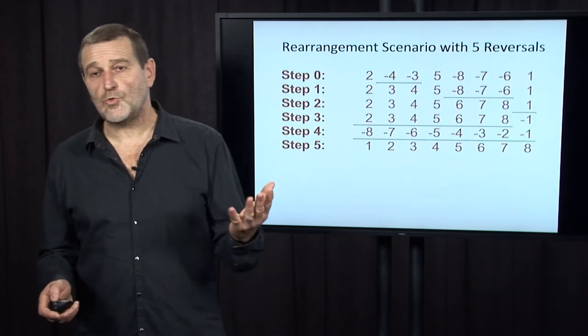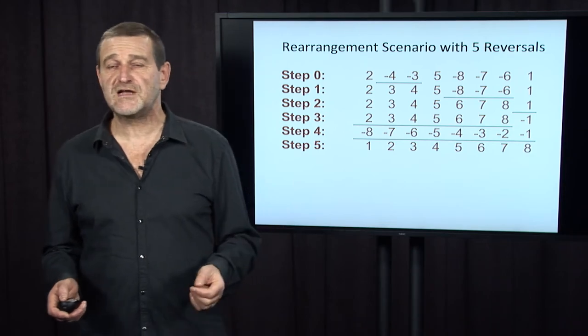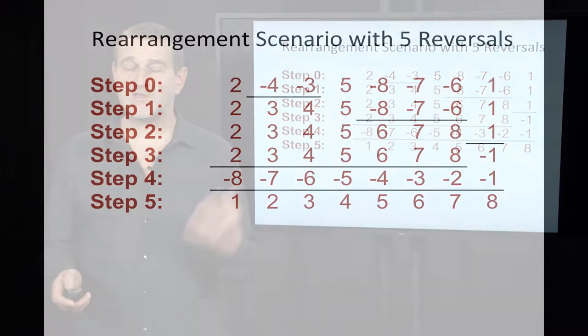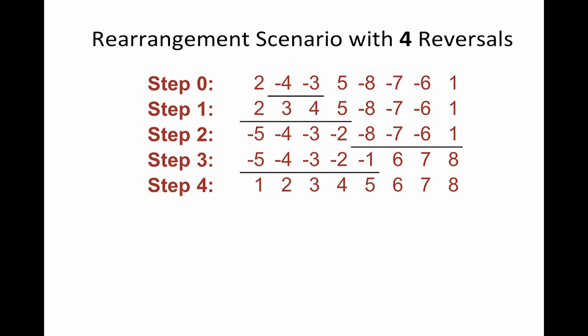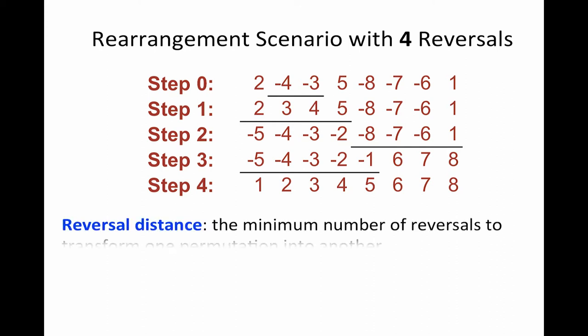So let's take a look at one possible rearrangement scenario. In this case, transforming permutation into identity permutation, which is plus one, plus two, plus eight, with five reversals. Is it the shortest scenario? No, because there is a shorter scenario that transforms the same permutation into identity with just four reversals.